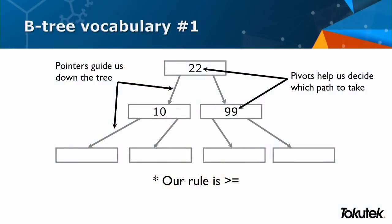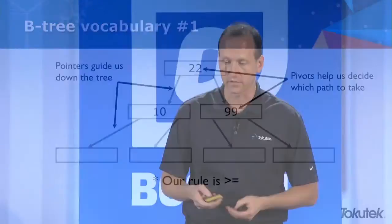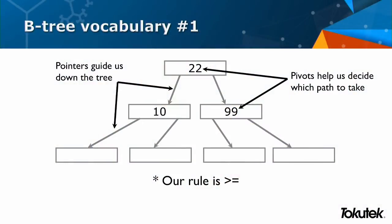Before we talk about B-trees, just some quick vocabulary. I think there are a lot of computer scientists in the room, so this should just be review. This is what a B-tree looks like — a very simple fan out of two. We've got pointers and pivots on this slide. The goal is to get to data quickly, to find things with relatively little effort. In these upper boxes we have things we call pivots — they help us decide what path to take to go right or left. We have pointers to take us down the tree to find the data we're looking for. Every B-tree has a rule; my rule is greater than or equal to. So we go right on the tree when we're greater than or equal to what we're looking for, otherwise we go left.